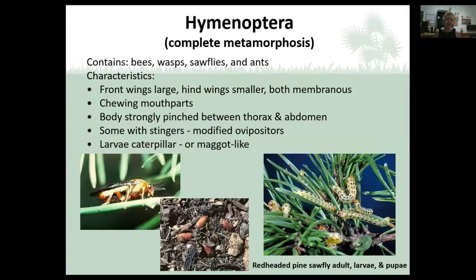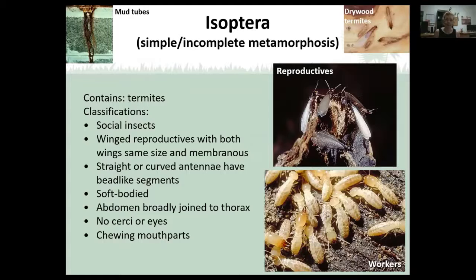The Hymenoptera order contains bees, wasps, sawflies, and ants. Wasps have that really thin pinched waist and a stinger at the end. Their immature stages are all larvae that look like maggots. The Isoptera are the termites - they are pests in their own way. They don't always have wings, usually just during reproductive season. They're all soft-bodied, grubby, have chewing mouth parts, and don't have eyes - they're blind. They're also eusocial insects, kind of like bees.